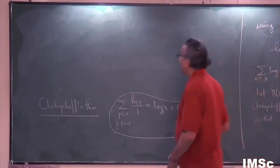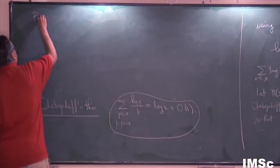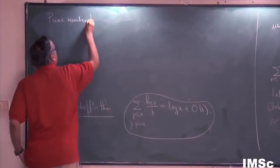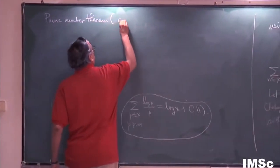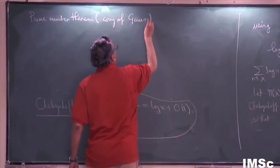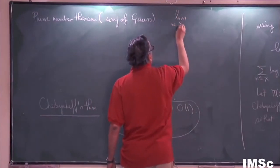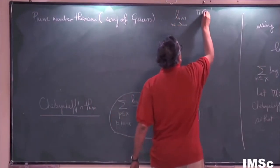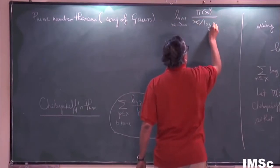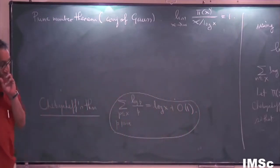So Chebyshev tried very hard to prove the Prime Number Theorem. The Prime Number Theorem was a conjecture of Gauss that says the limit as x goes to infinity of π(x) divided by x over log x equals 1. That's the conjecture.